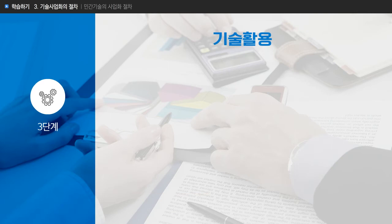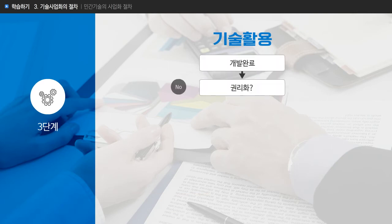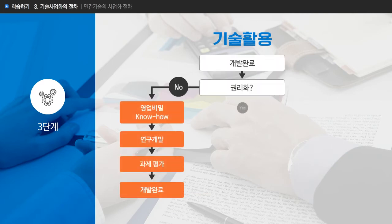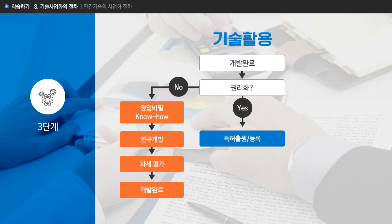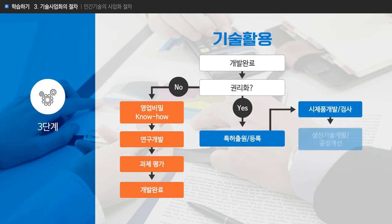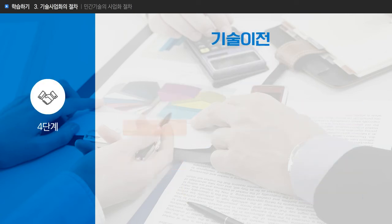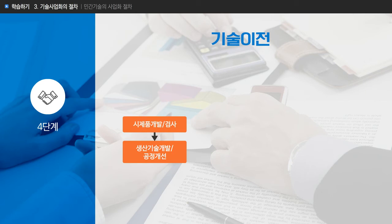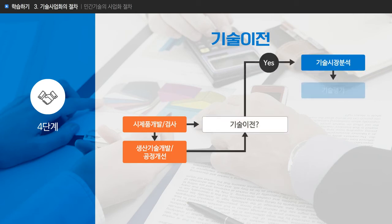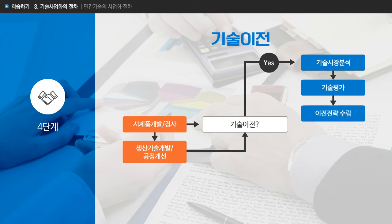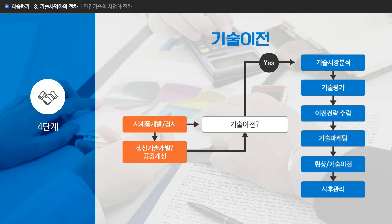기술 활용 단계에서는 개발 기술에 대한 권리화를 결정하게 되며 특허 출원 여부와 등록 절차를 밟게 됩니다. 이어서 시제품 개발과 생산, 마케팅으로 이어지는 프로세스로 연결됩니다. 반면 제품의 직접 생산을 원하지 않을 경우 기술 이전 단계로 이관하여 기술 시장 분석, 기술 평가, 기술 이전 및 기술 마케팅 활동을 하게 됩니다.